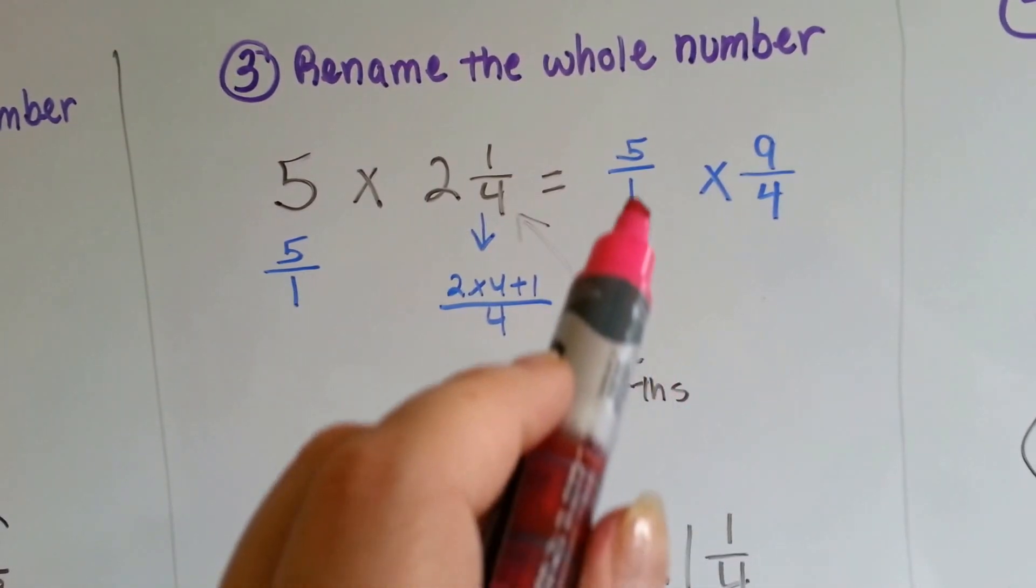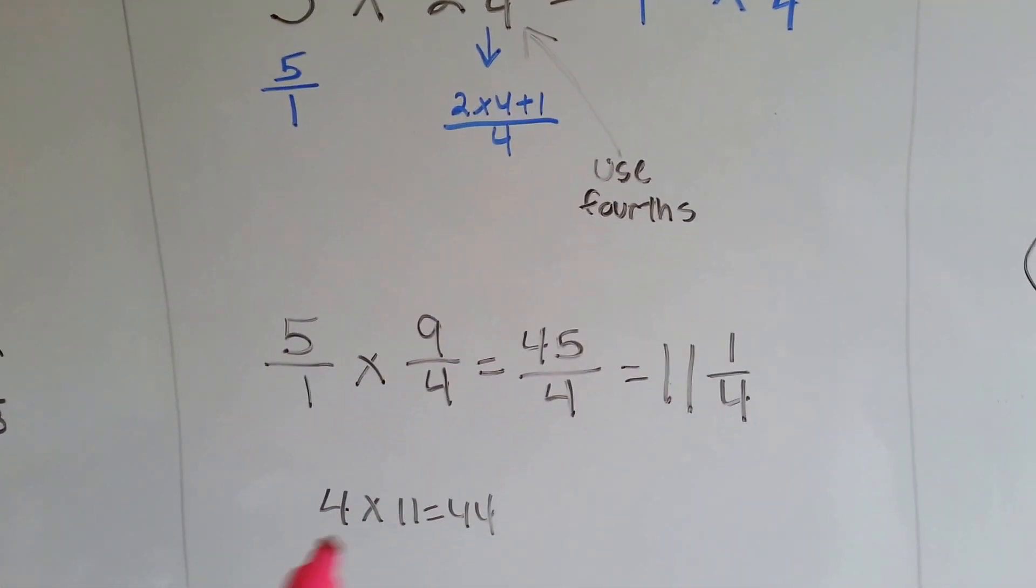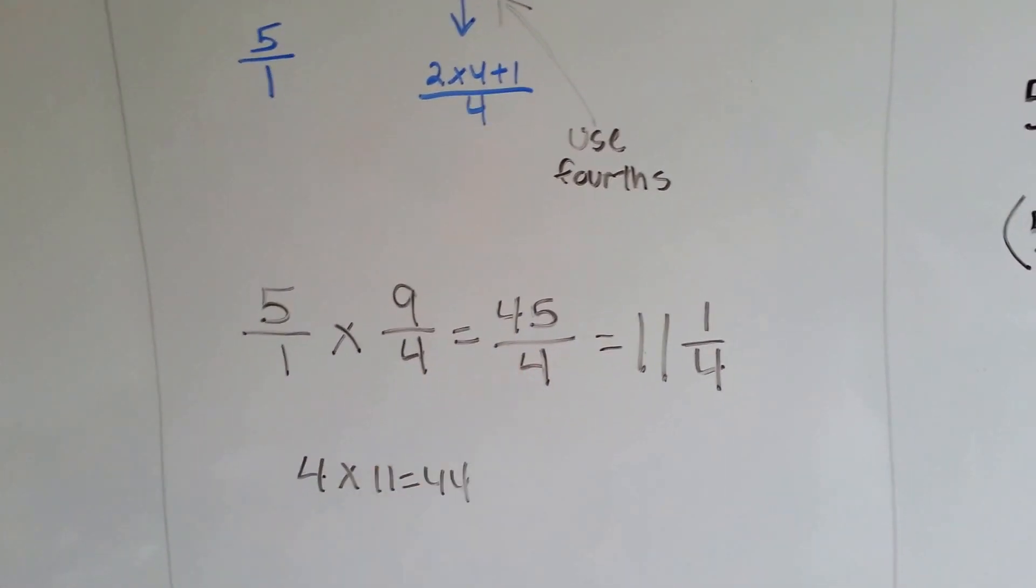5 times 9 is 45, 1 times 4 is 4. We know that 4 times 11 is 44 and that's just 1 away, so we have 11 and 1 fourth.